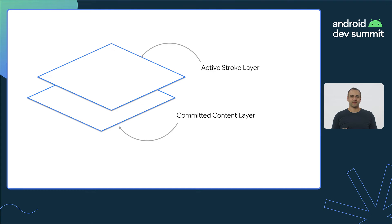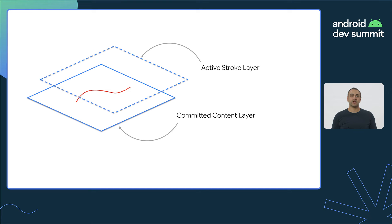Let's see how it works. When the user is actively drawing with the stylus, content is drawn into the front-buffered layer to minimize latency. When the user lifts the stylus, the content is re-rendered into the multi-buffered layer while simultaneously hiding the active stroke layer. As a result, any potential rendering artifacts in the active layer are no longer visible.